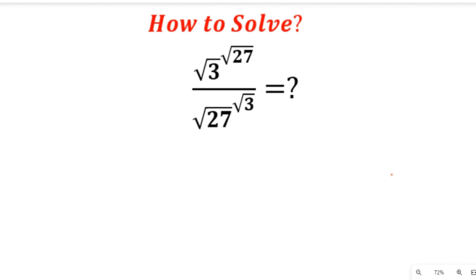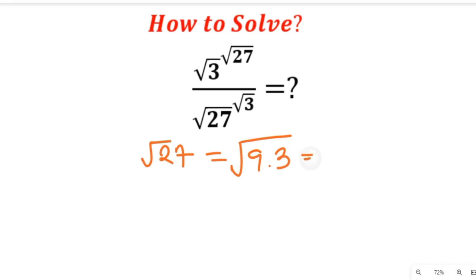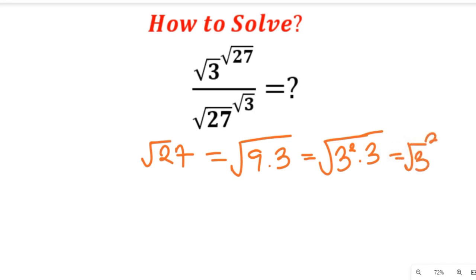The first thing we'll do is simplify the square root of 27. The square root of 27 can be written in surd form as the square root of 9 multiplied by 3, which equals the square root of 3 squared multiplied by 3. We can then separate the square root to give us the square root of 3 squared, multiplied by the square root of 3.